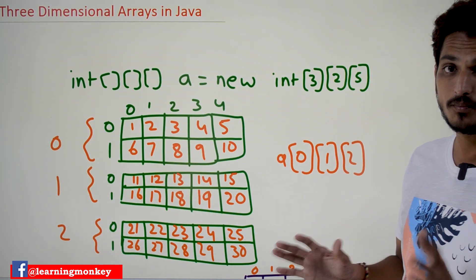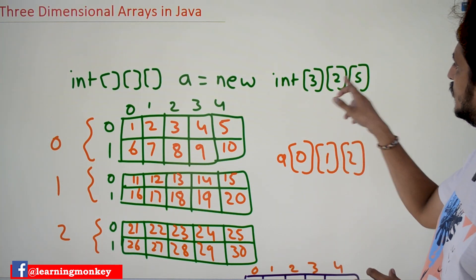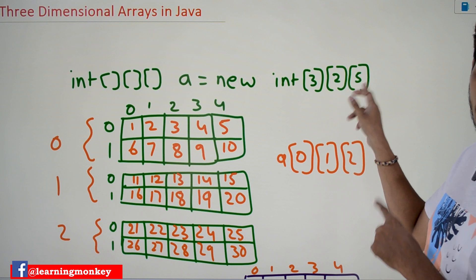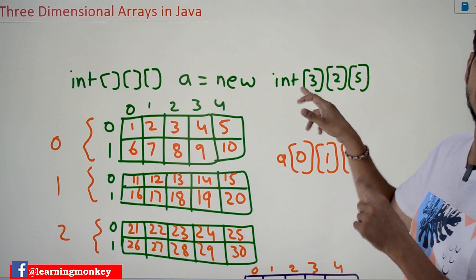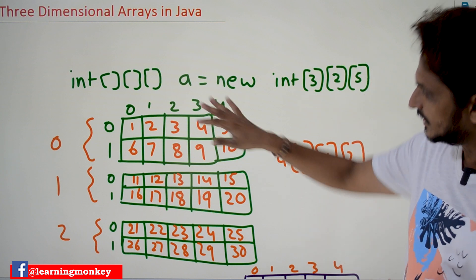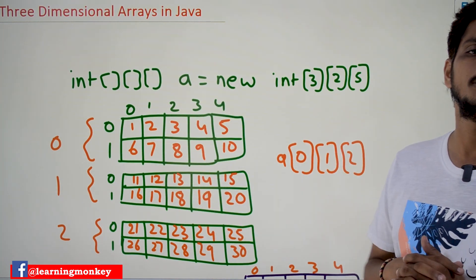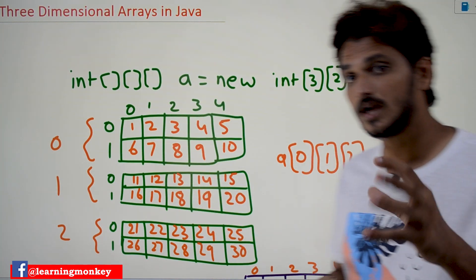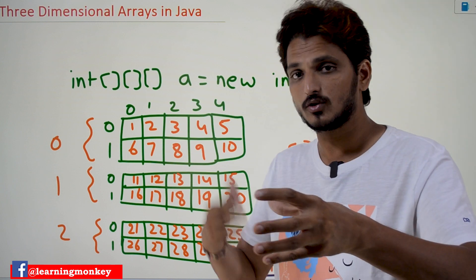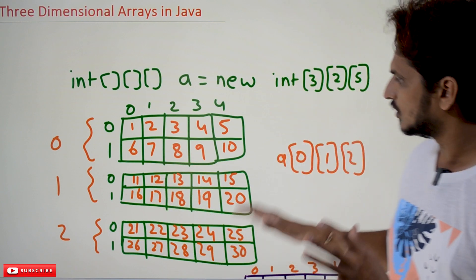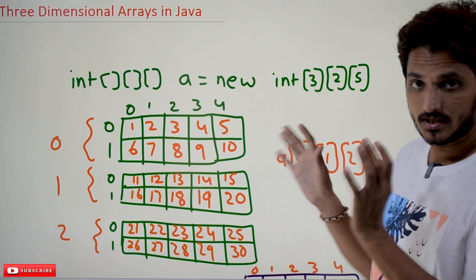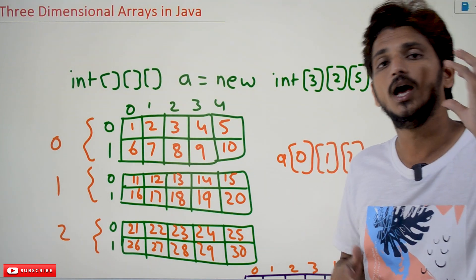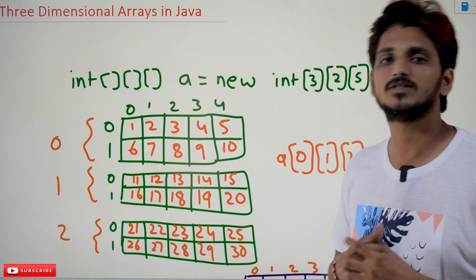Total, how many spaces is it going to assign? Two by five gives ten spaces. Since we need three of them, total thirty spaces will be assigned. This is the visualization you should get in your mind when discussing three-dimensional arrays.